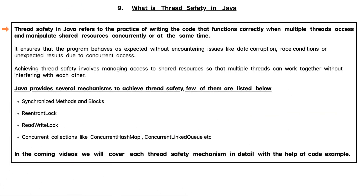Thread Safety in Java refers to the practice of writing code that functions correctly when multiple threads access and manipulate shared resources concurrently or at the same time. It ensures that the program behaves as expected without encountering issues like data corruption, race conditions, or unexpected results due to concurrent access.